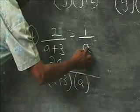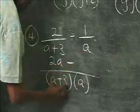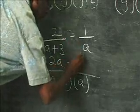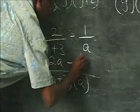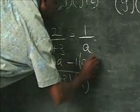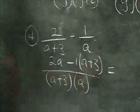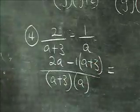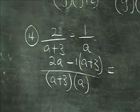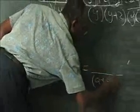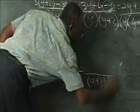The a will cancel the a, so we have a plus three to multiply by one — it's really one times a plus three. The LCM remains a plus three multiplied by a.